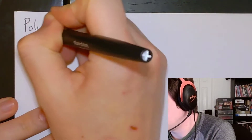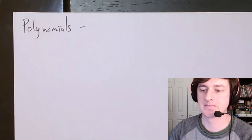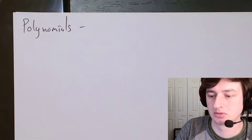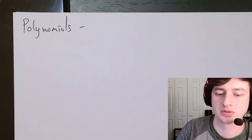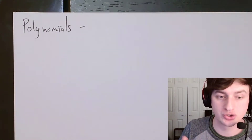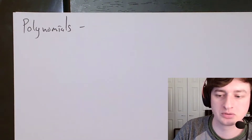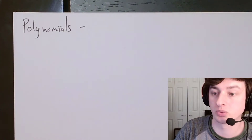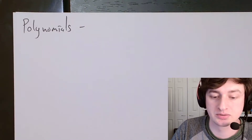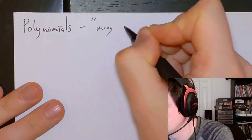Chapter 4 is all about polynomials. Polynomials is really a prefix and a word smashed together — 'nomial' being a root of the word for number, and 'poly' being a prefix that means many. So a polynomial is just many numbers.